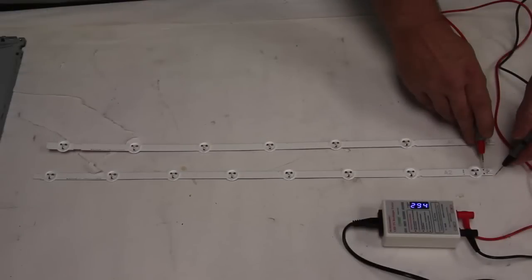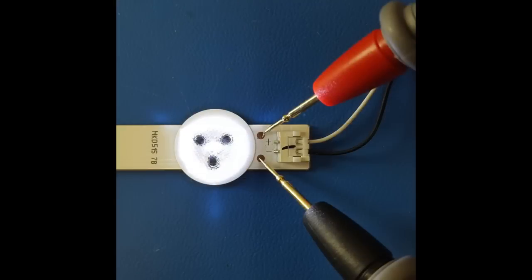The next test that we will show is how to test the LED strip. As you can see, we have two identical strips. I will begin by identifying the positive and negative test points at the end of the strip. Most strips should be labeled as positive and negative.